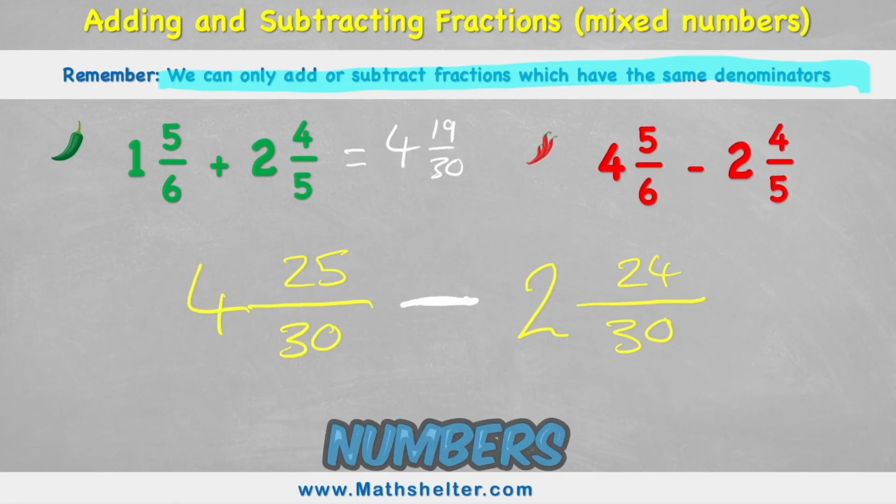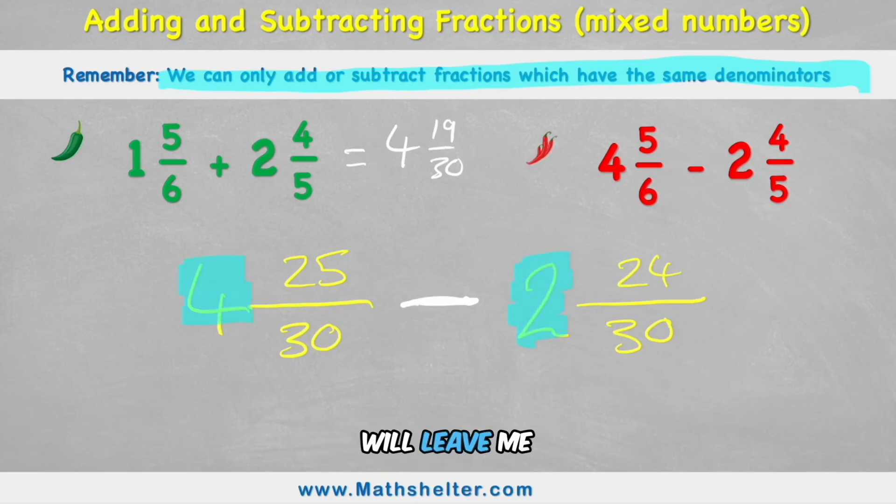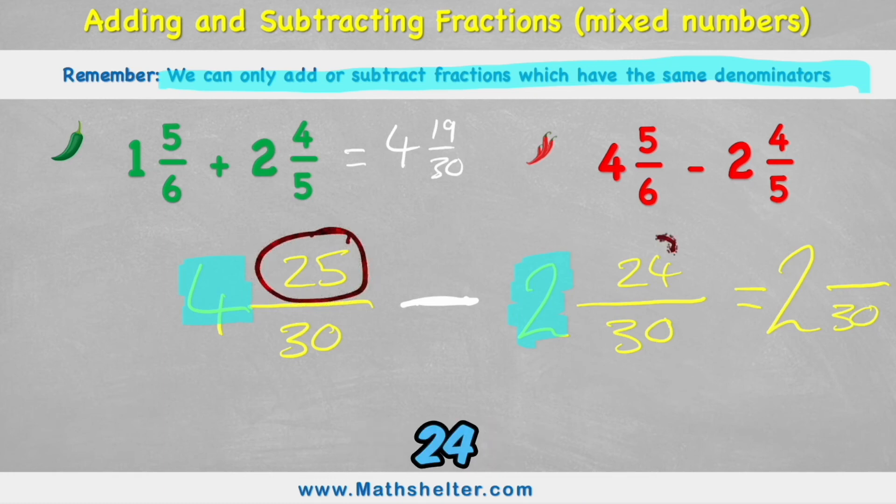So I'm going to do my whole numbers first of all. 4 subtract 2 will leave me with 2. And then we know my answer is going to be in thirtieths. And if I had 25 thirtieths and I take away 24 of them, I'm going to be left with 1 thirtieth. So my final answer for 4 and 5 sixths subtract 2 and 4 fifths is 2 and 1 thirtieths. Easy.